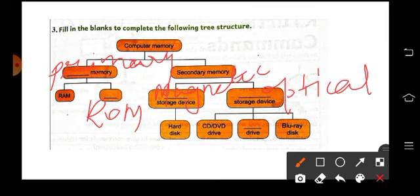So under magnetic comes the hard disk and optical CD, DVD, USB drive or you can write pen drive. P-E-N, pen drive, Blu-ray disk.